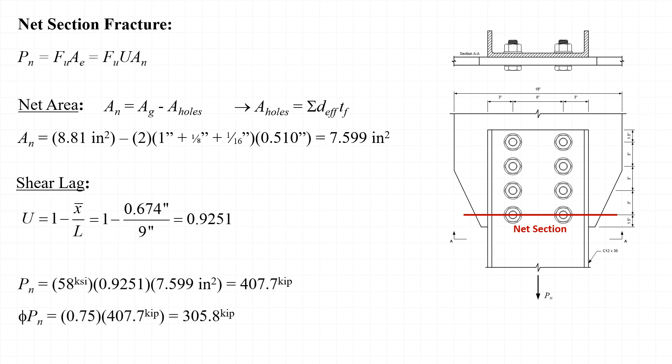Evaluating the nominal strength with respect to net section fracture, we have 58 KSI for f sub u, 0.9251 for the shear lag reduction coefficient U, and 7.599 inches squared for the net area A sub n. We find that the nominal strength P sub n is equal to 407.7 kips. When we apply the resistance factor of 0.75 for net section fracture, the design strength phi times P sub n is equal to 305.8 kips.